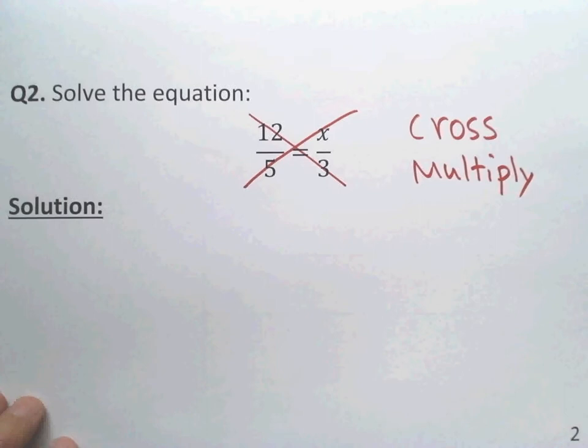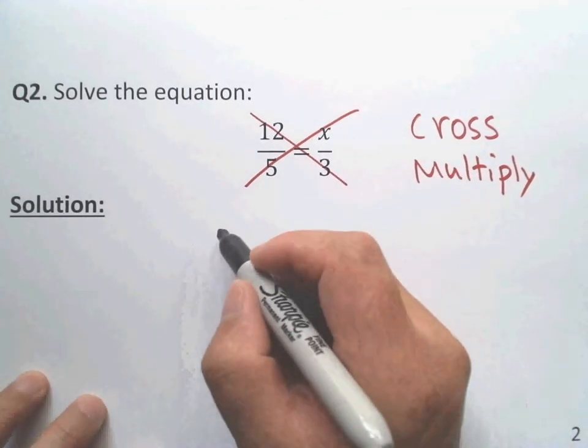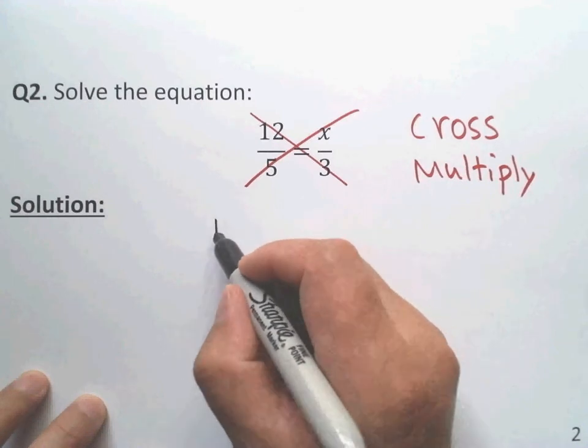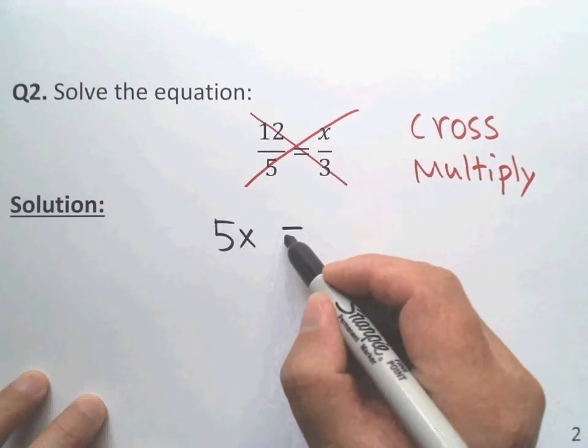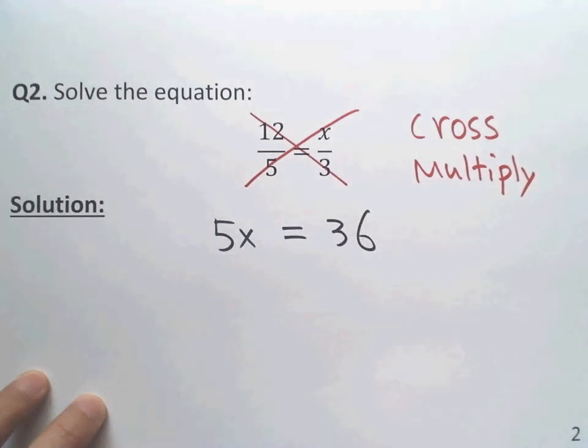And then we set up the linear equation. The 5 times x, we wrote it to the left side, it's easy to see. So 5x equals 3 times 12, which is 36. That's the linear equation.